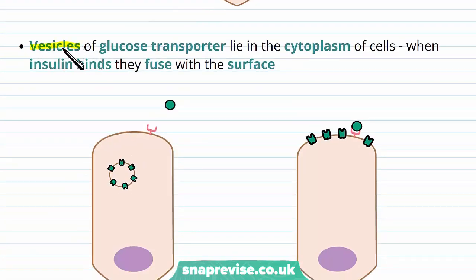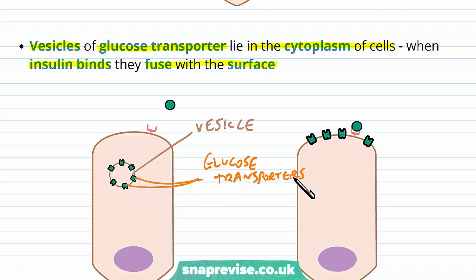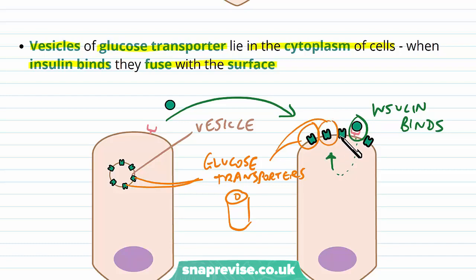There are vesicles — membrane spheres of glucose transporters — in the cytoplasm of the cells. When insulin binds to its receptor, these begin fusing with the surface membrane. This is one of those vesicles: it has glucose transporter channels sitting in its membrane, not really doing anything at rest. When the insulin binds to the receptor, certain changes take place where the vesicles are brought to the surface of the membrane. Now these transporters have been put into the membrane and they're ready to start working.